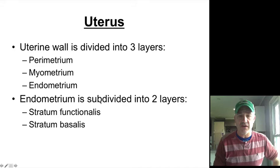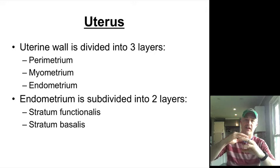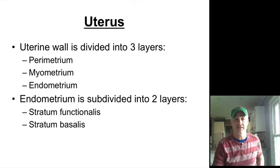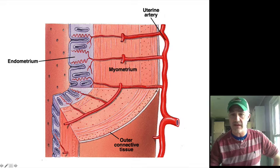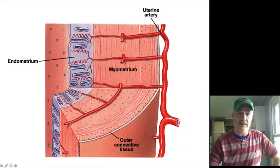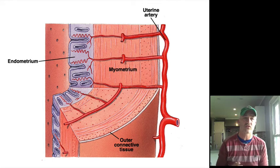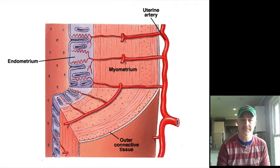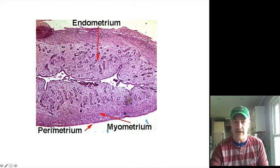The myometrium is what oxytocin acts on during childbirth. Within the endometrium, you have two layers: the stratum basalis, the permanent base layer that is always present, and the stratum functionalis, which builds up during the monthly cycle in preparation for possible implantation and is shed if no implantation takes place. The myometrium makes up most of the uterus by weight and size, and you can see the endometrium as the interior lining.